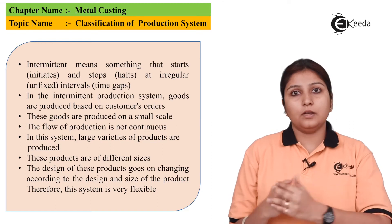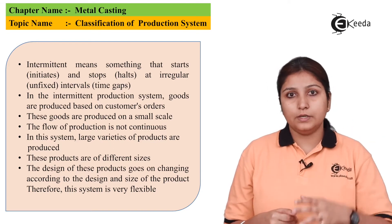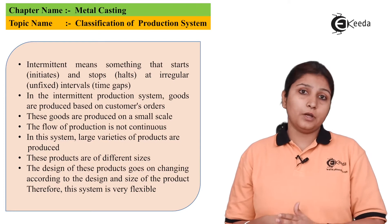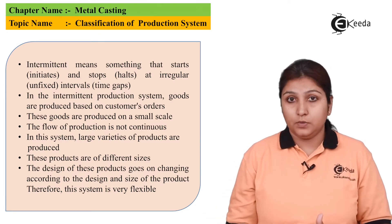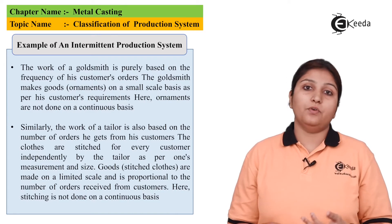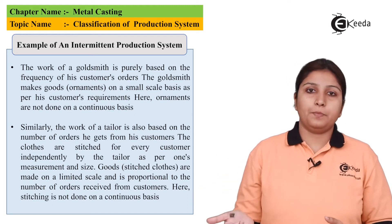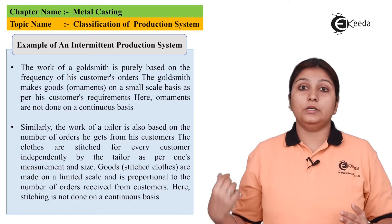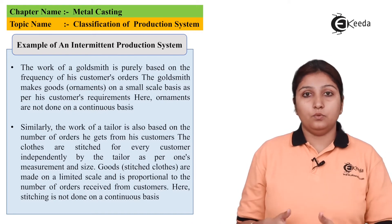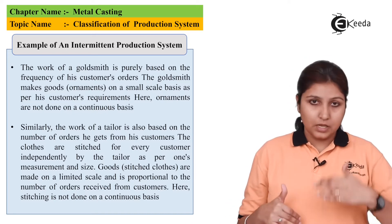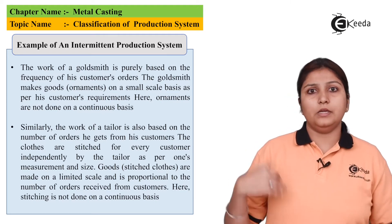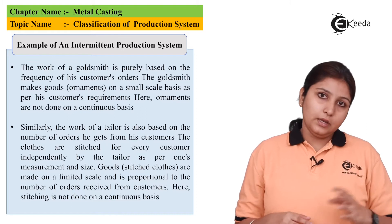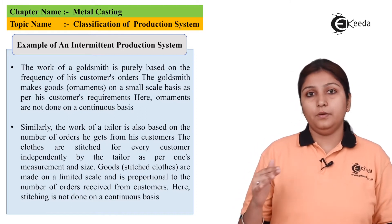If the production line is not working continuously — it halts, it works, it halts, it works — you can't promise the customer to deliver the same product again and again. In intermediate production, production is done but not on a fixed basis, not at fixed intervals. A clear example is the work of a goldsmith: as the order comes, the goldsmith prepares the material like ornaments. Similarly with a tailor — as the order comes, they do the work. Orders won't be similar; they can be different. The goldsmith can prepare an earring, a ring, or a necklace — different orders, different quantities, at different intervals.